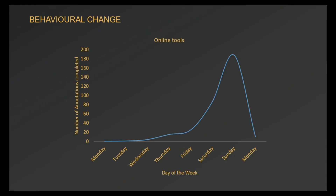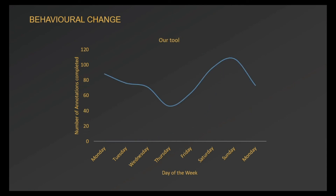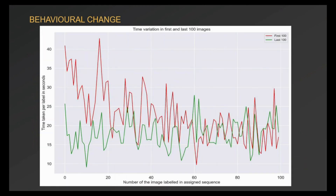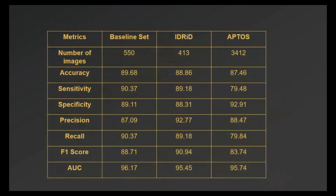We have seen a total behavioral change: on the online tools, graders used to work only on weekends, but on our tool, we have logged usage on all days of the week and in almost all hours of the day. Average time taken to label a single image reduced substantially. We validated the AI algorithms developed using annotations from this tool on new testing datasets and found them to have really high performance scores.